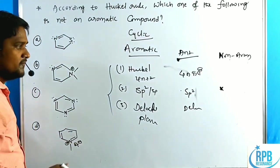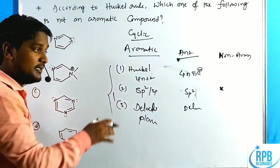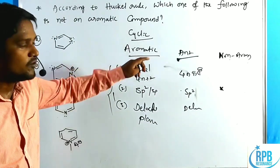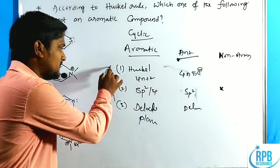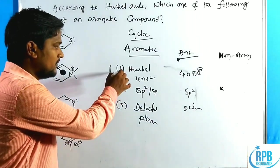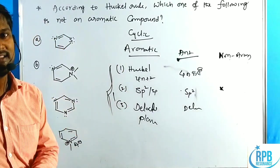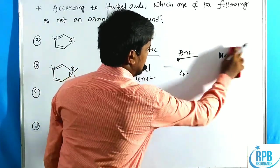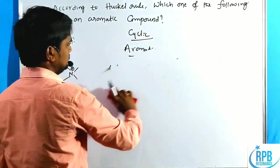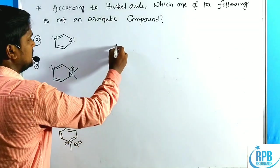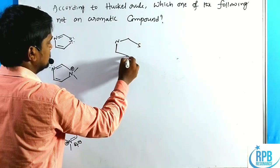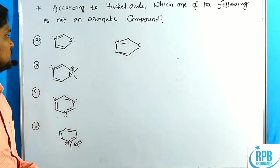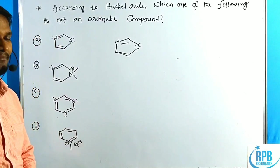According to the question, they are asking about the non-aromatic compound among the following options — whichever compound does not obey any one of these three rules is not aromatic. They are asking which is not an aromatic. Now let us go through the first example. Here is the first compound, which is an aromatic heterocyclic compound, and we need to determine whether it is aromatic or not.